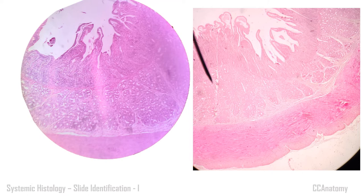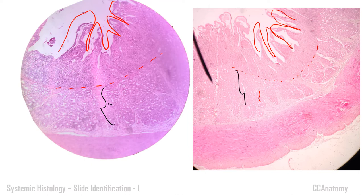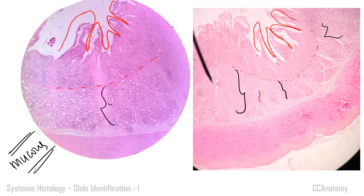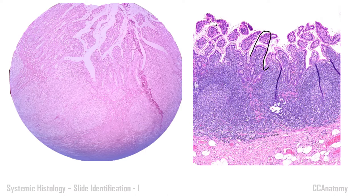Try to differentiate villi from crypts in this slide. Yes, these are all villi — you can make out the different projections. Here you can see the muscularis mucosae. Below the muscularis mucosae, this complete region contains the submucosal glands — Brunner's glands — which are mucous in nature. Due to faint staining, the glands may not be seen clearly, but villi with glands in the submucosa means you can easily label this as duodenum.